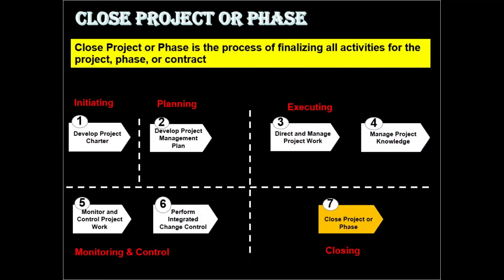Let me start. This is the seventh and last process in the project integration management. It is defined as: the Close Project or Phase is a process of finalizing all the activities for the project phase or contract. The key benefit of this process is that the project phase information is archived, the planned work is completed, and the organizational team resources are released to pursue new endeavors.